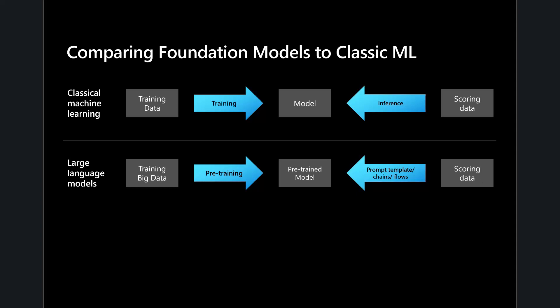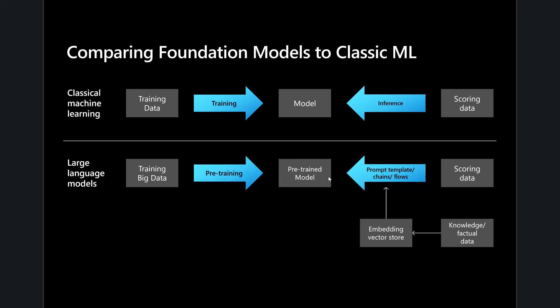It can get more complicated because we often provide additional data to the question before it goes into the model. These models, once trained, are massive and take a tremendous amount of time and compute resources to train. They can become stale, and there may be private or domain-specific data the model was never trained on. So we want to help the model out by taking additional data — images, video, text — and creating embeddings, a kind of encoding, that we add to our prompt to get the most accurate information for our questions.